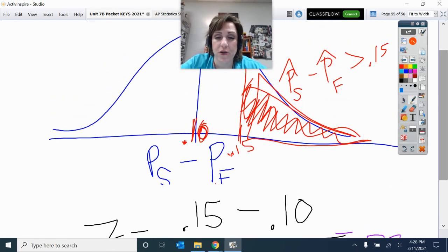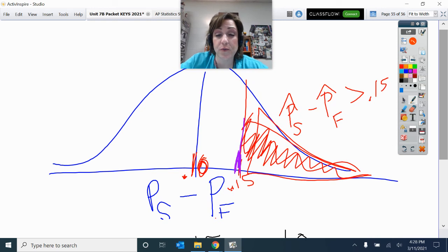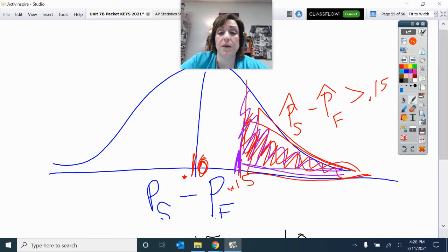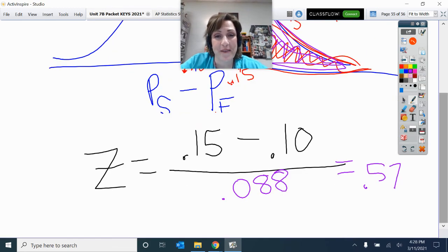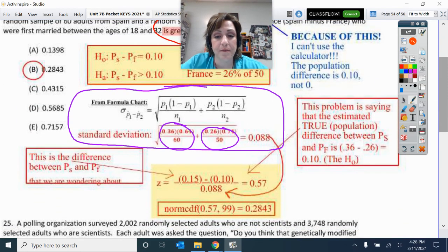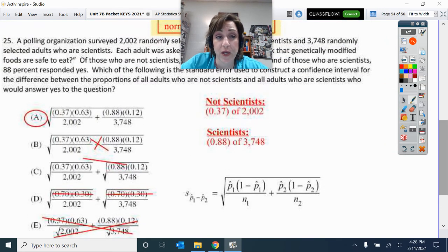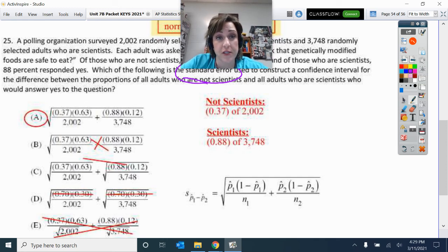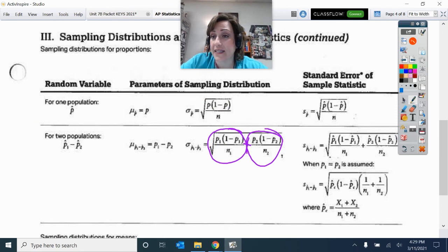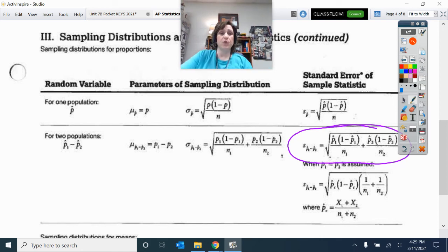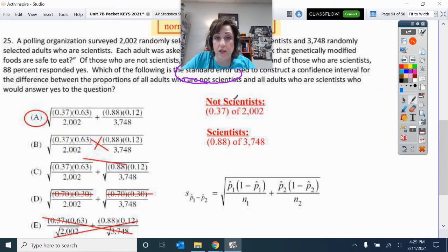So I kind of knew that when I was drawing this picture. This may be a little more than 0.57 standard deviations away. But now I just norm CDF from 0.57 up to 99 to find that p-value, and that comes out to be 0.2843. Now hopefully this last one came out pretty simple for you. They wanted to know the standard error for the difference between those two proportions. And so that is this. Remember standard error is made with sample proportions. So you were just filling in those blanks for the non-scientists and the scientists.